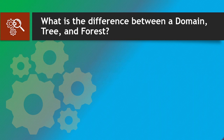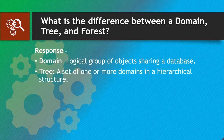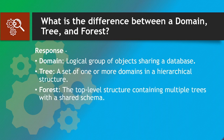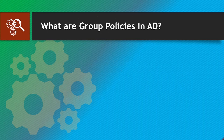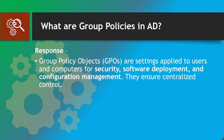What is the difference between a domain, tree, and forest? Response: Domain — a logical group of objects sharing a database. Tree — a set of one or more domains in a hierarchical structure. Forest — the top-level structure containing multiple trees with a shared schema.